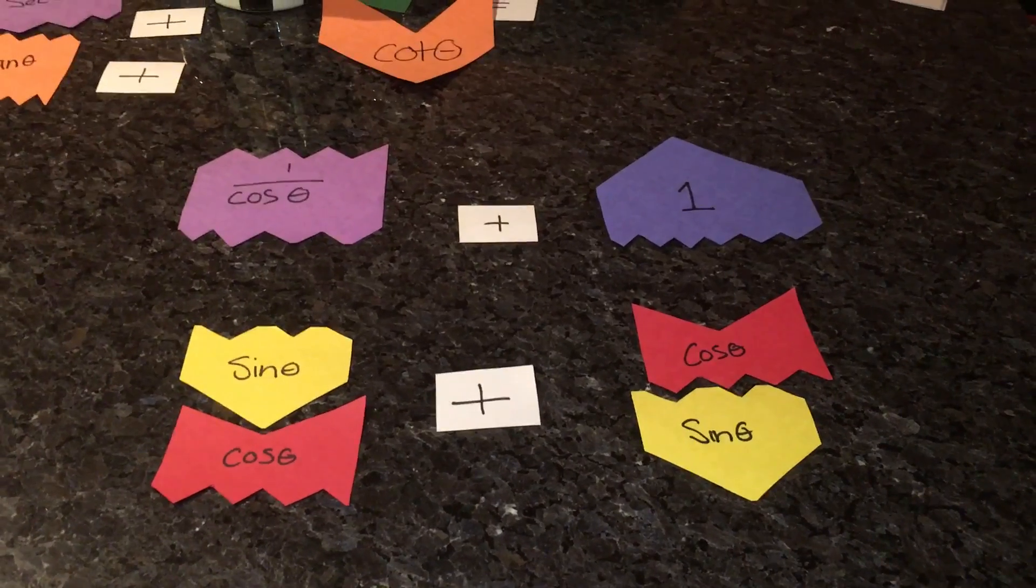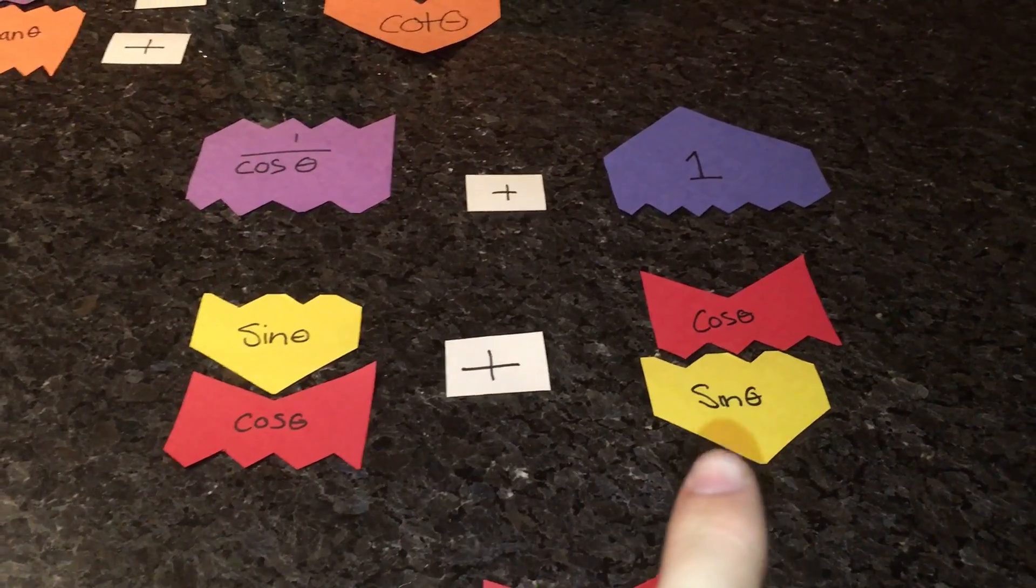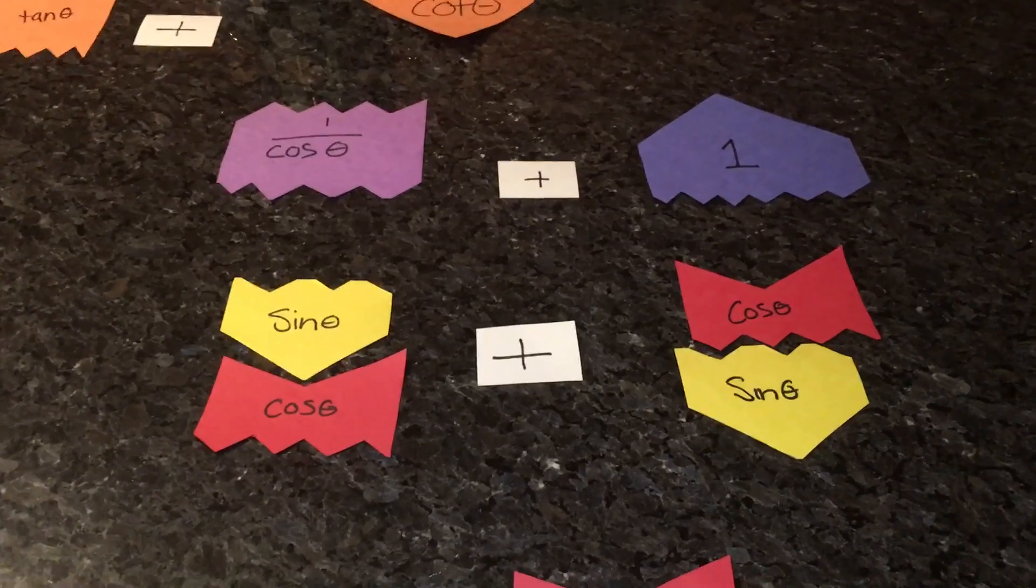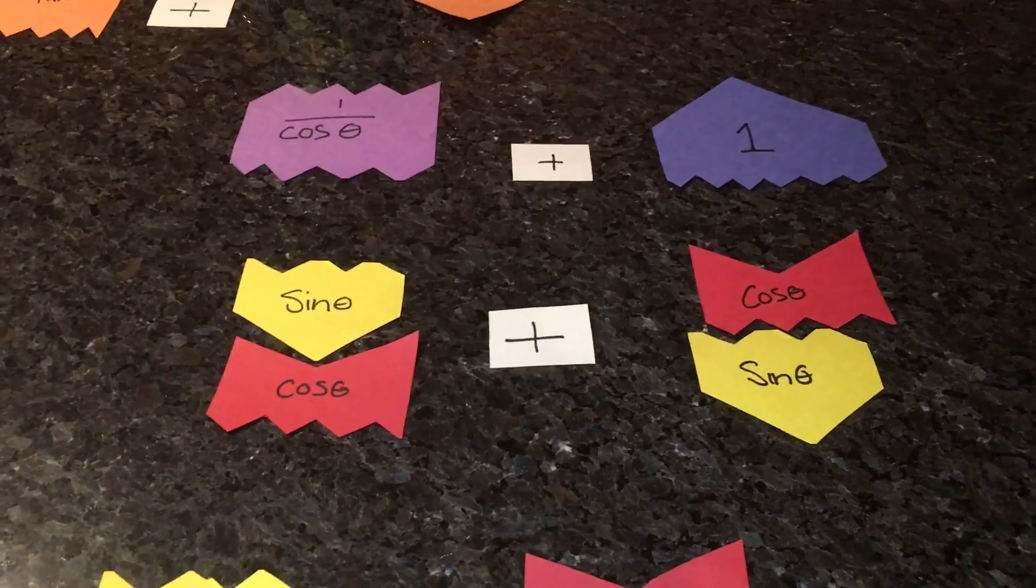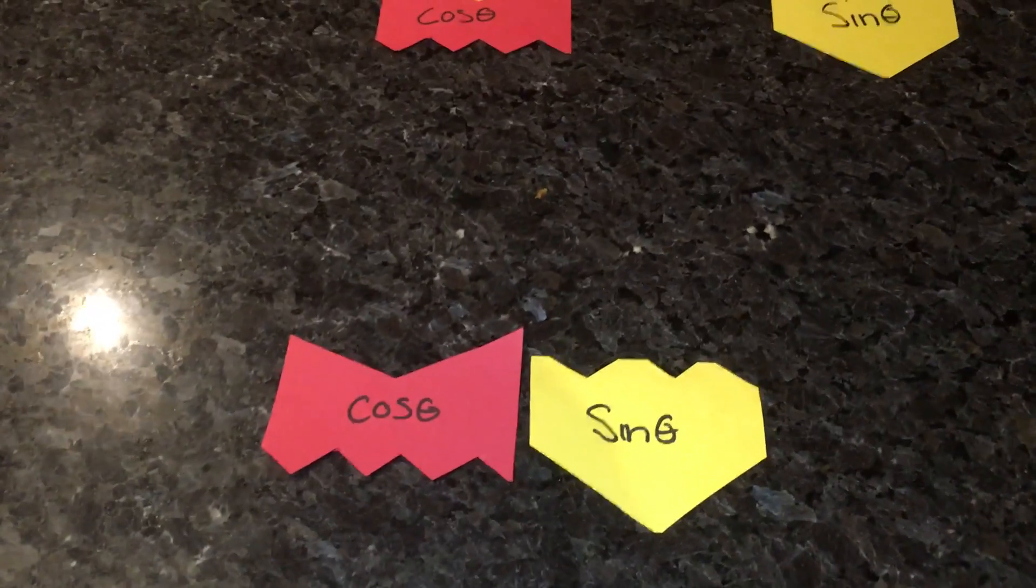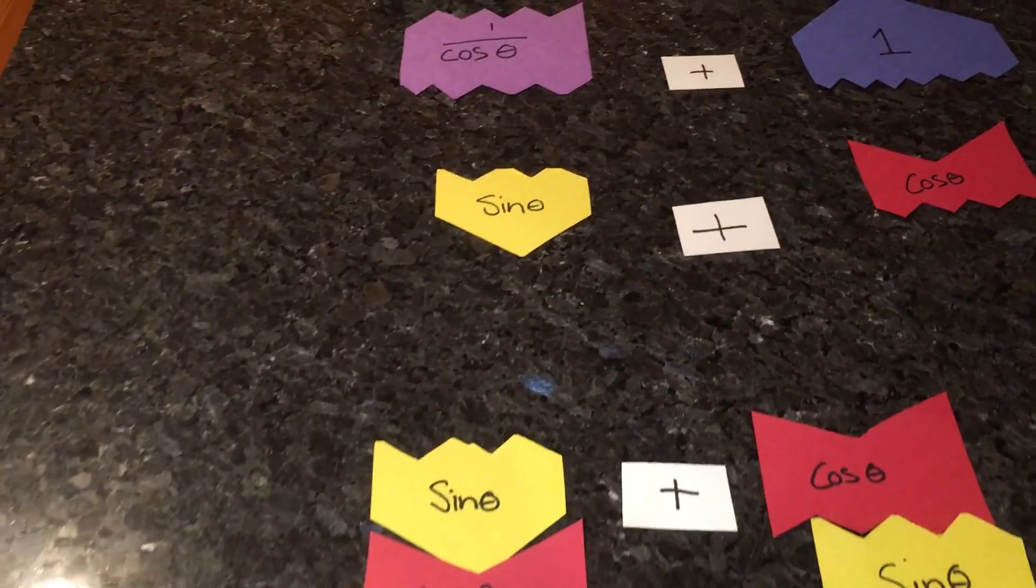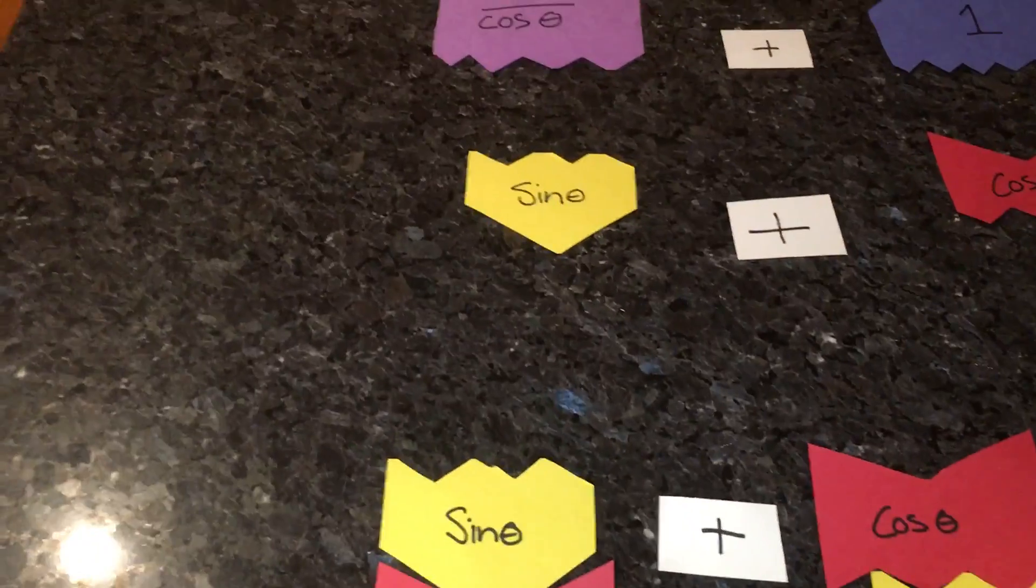For our denominator, we will have to find a common denominator as well for these ones right down here. So we have to multiply sine by cosine for our common denominator. And when you multiply on the bottom, you have to multiply on the top as well. So sine multiplied by sine,